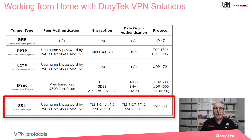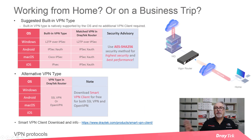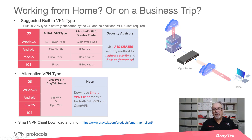Draytek's Smart VPN client has an SSL option and is supported by Windows PCs, Android and Apple Mac devices. You can even initiate an SSL VPN using just a web browser, but Draytek's Smart VPN client is the preferred way. For Windows, we recommend an L2TP over IPsec VPN. Most others use an IPsec variation, or alternatively SSL or OpenVPN for remote dial-in users.